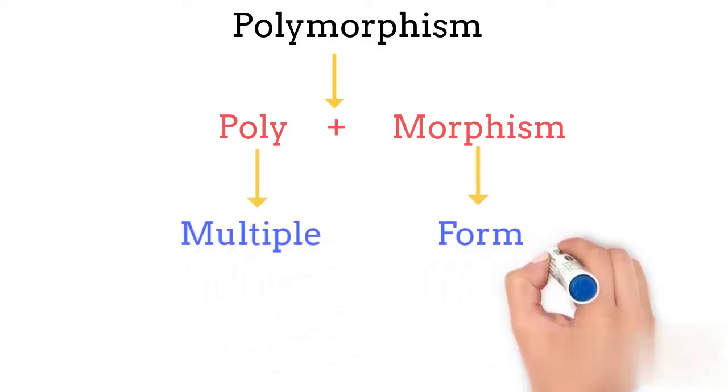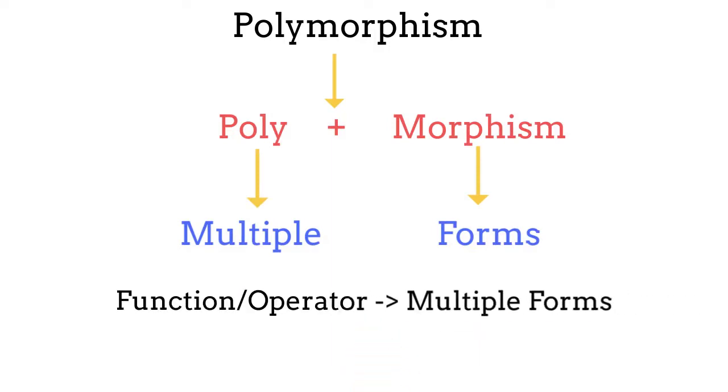The word polymorphism is a combination of two different words: poly and morphism. Poly means multiple and morphism means form. So polymorphism in object oriented programming means one function or one operator can have multiple forms.